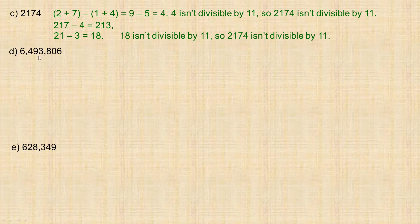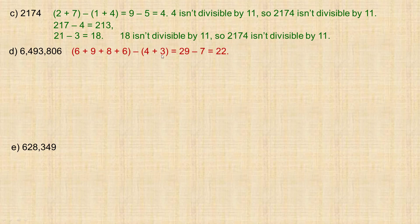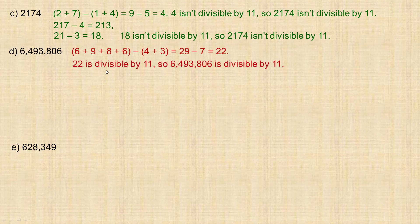Larger number: 6,493,806. We add the odd-place digits — 6, 9, 8, and 6 — to get 29, and the even-place digits — 4 and 3 (the sixth place is 0) — to get 7. Then 29 minus 7 equals 22. Since 22 is divisible by 11, the number 6,493,806 is divisible by 11.